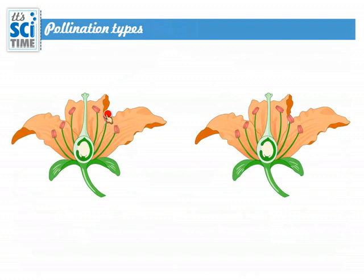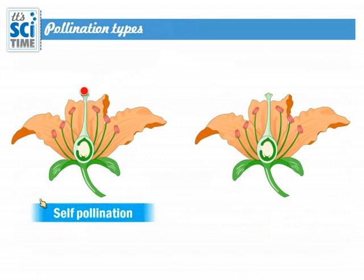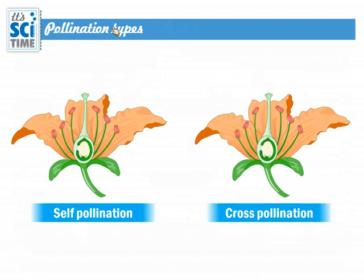Pollination is of two types. If pollen travels to the stigma of the same flower, it is called self-pollination. If pollen travels to the stigma of a different flower, it is called cross-pollination. Self-pollination is disadvantageous, so plants always try to reduce self-pollination and promote cross-pollination, because self-pollination gives less chance for variations and produces weaker generations.